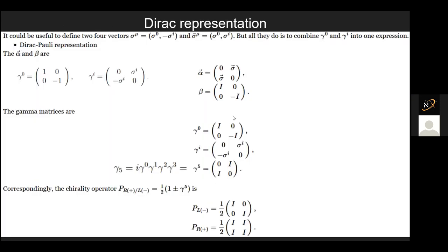So the three representations are the Dirac representation, the Weyl representation, and the Majorana representation, named after the three scientists. Let's see what Dirac has to say about his own equation.